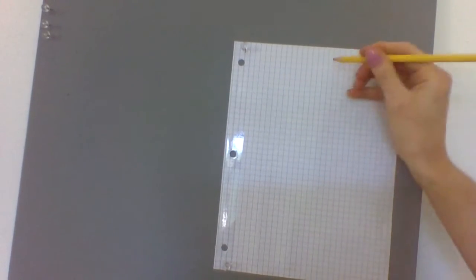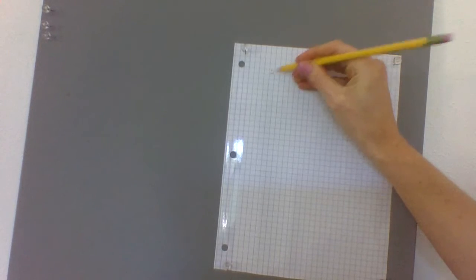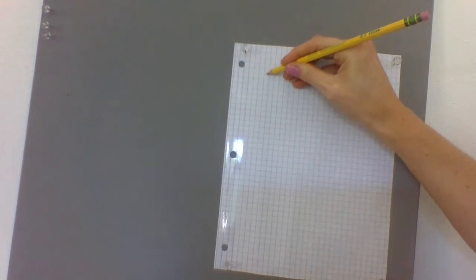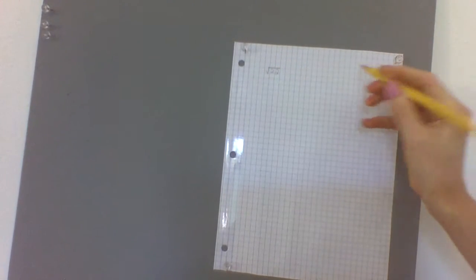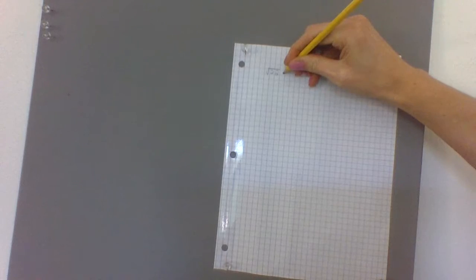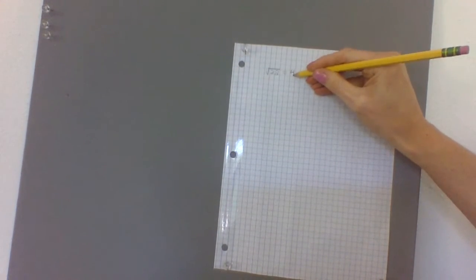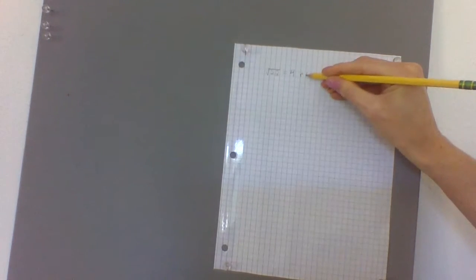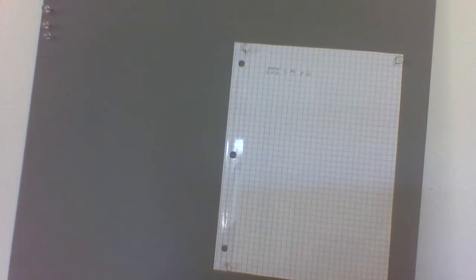We can say that 22 contains this square of four with a remainder of six. This little lowercase r stands for remainder.